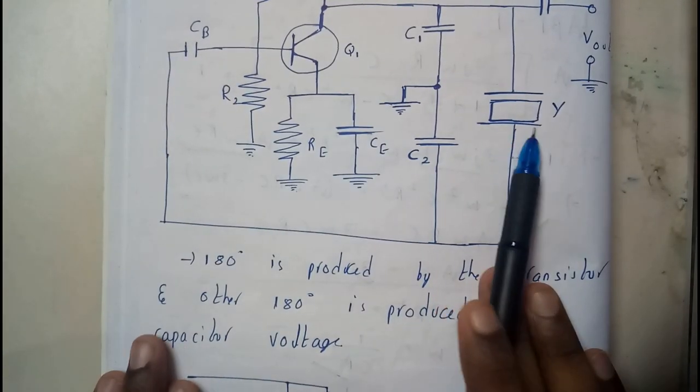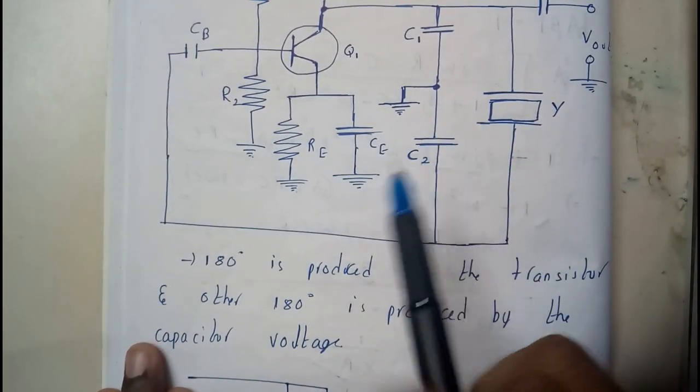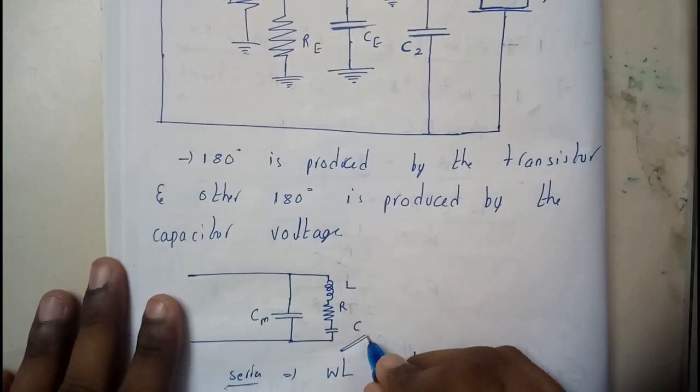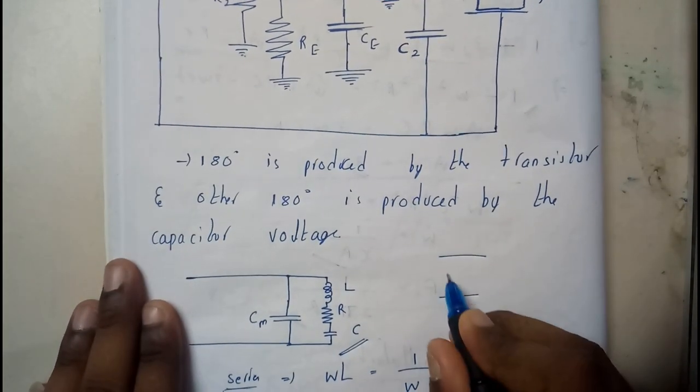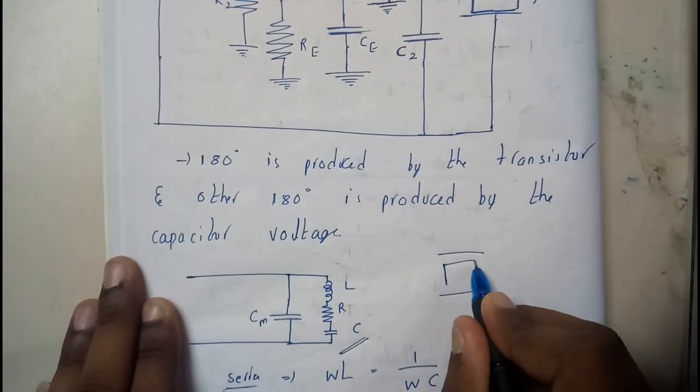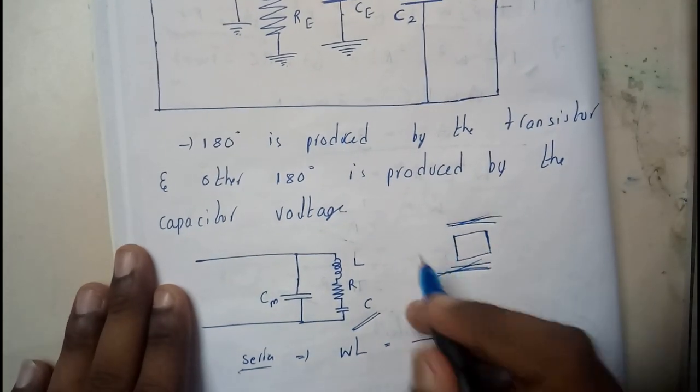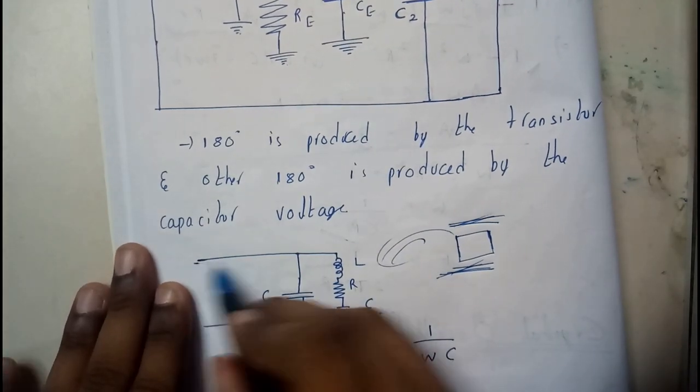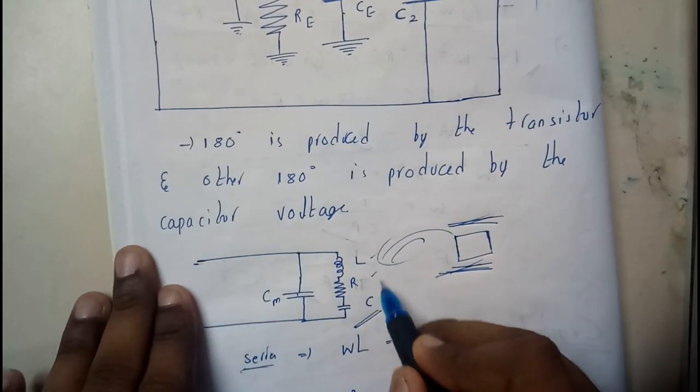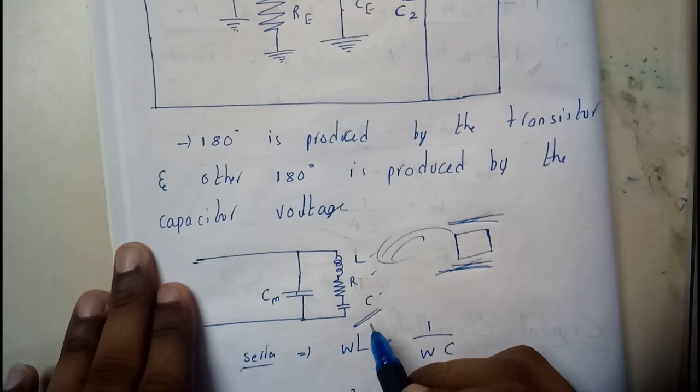Internally, the crystal is placed in between two parallel metal plates, or we can call it as a capacitor. This internal circuit will be something like this: it will be having a capacitor, inductor, resistor, and capacitor.